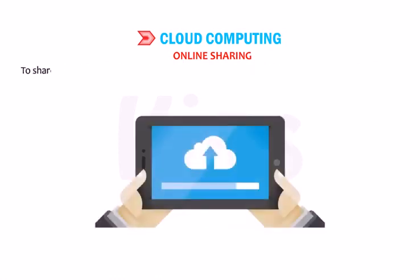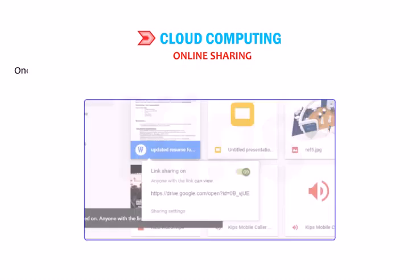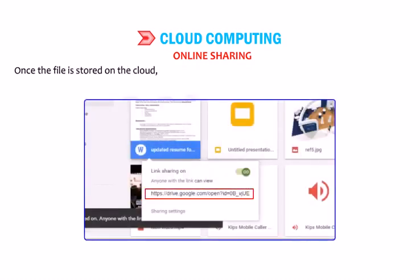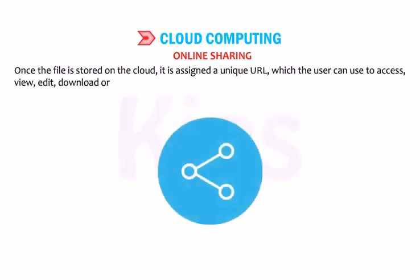To share files on a cloud-based storage, users are first required to upload the file on the cloud server. Once the file is stored on the cloud, it is assigned a unique URL, which the user can use to access, view, edit, download or share the file.